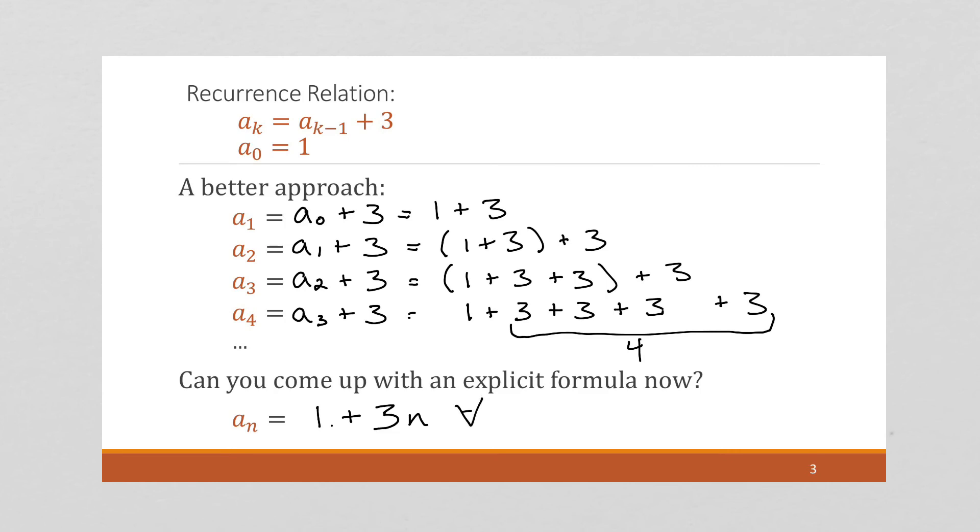And this is for all n greater than or equal to 1, because in an explicit formula, you have to specify the starting point of the sequence. And this is only possible because we can notice a pattern of the number of 3's correlating to the subscript below.